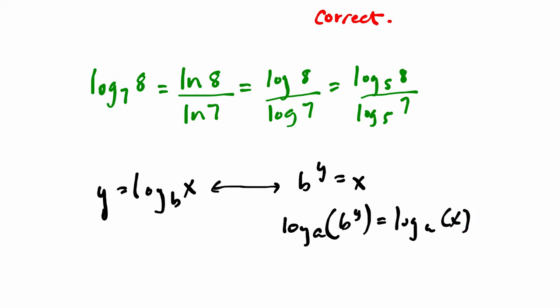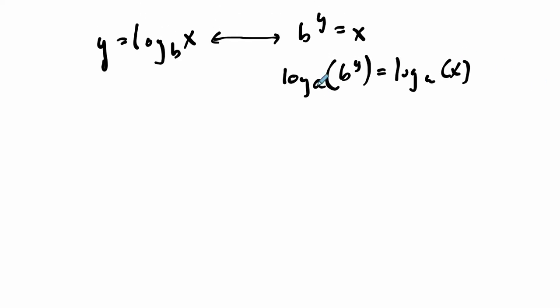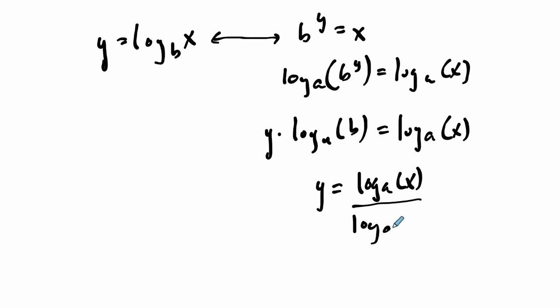And then what happens? Well, here, we've taken the log of both sides. I can bring this exponent down in front. That's a law of logarithms, right? y times the log base a of b equals the log base a of x. And if I want to get y by itself, you'll see this is going in a moment. That's the log base a of x divided by this factor here, divided by the log base a of b.